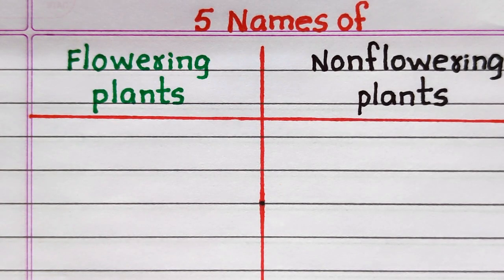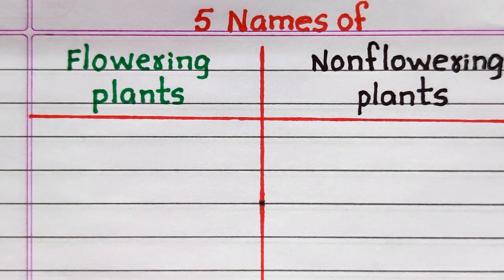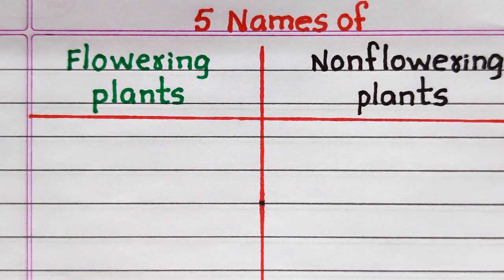Hello everyone. Welcome to my channel 10 lines essay. Here in this video I'll write five names of flowering plants and non-flowering plants. Let's get into the video.